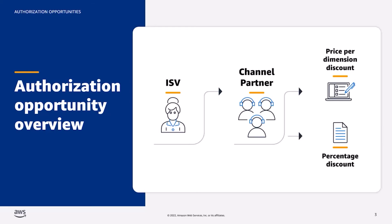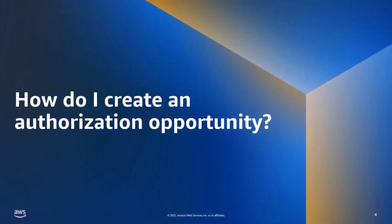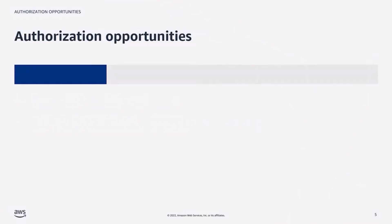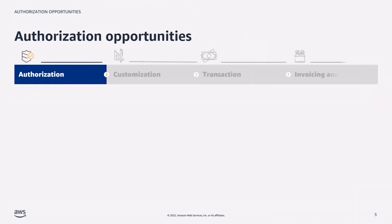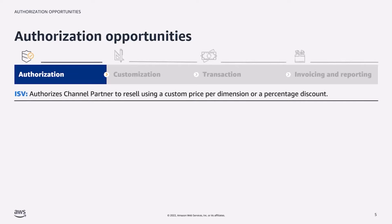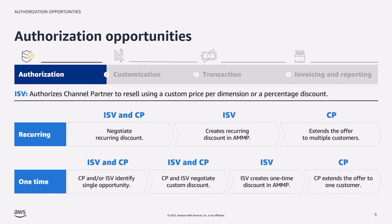Let's dive a little deeper. There are four steps required to set up a consulting partner private offer, or CPPO. ISVs manage the first one: Authorization. As an ISV, you can authorize either a recurring discount that a channel partner can use for multiple customers, or a one-time discount. The discount that you authorize will in turn create the wholesale price for the CP.